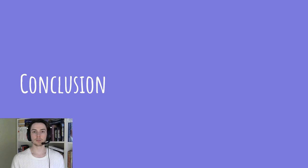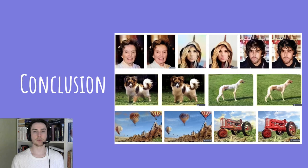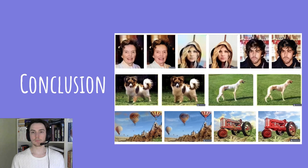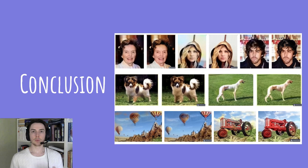In conclusion, Zhang et al.'s method can produce strong colorization but does not always generalize well. Our smaller models trained on dogs and celebrities colorized new images in those categories well, while the ImageNet model struggled more. We share the same weaknesses as the original paper, including bias toward background colors and toward sepia tones. Quantitatively measuring colorization proved difficult: while FID worked relatively well, classification accuracy did not provide meaningful insights. The Turing test gave the most promising results, which makes sense since fooling human perception is the ultimate goal. Thank you for listening — this concludes our presentation.